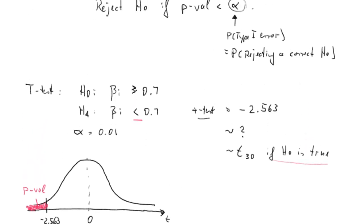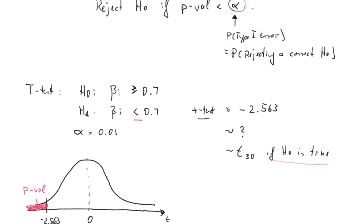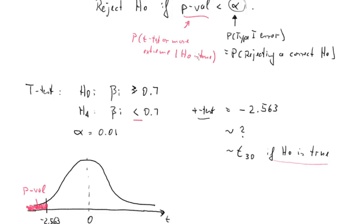The key point here is 'if H0 was true.' The p-value is the probability of getting a test statistic at least as extreme as — or more extreme than — the actual test statistic, if H0 is true. We compare that against alpha, the probability of a type 1 error, which is the threshold we set ourselves.